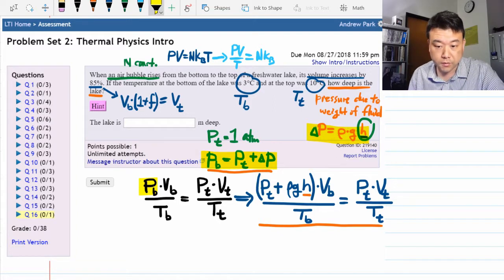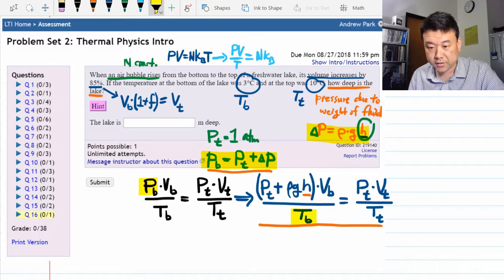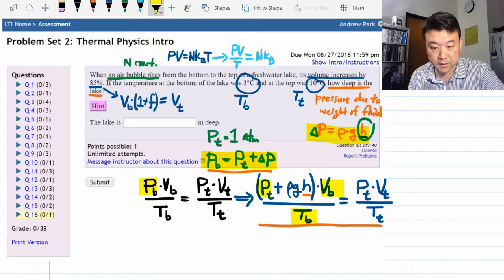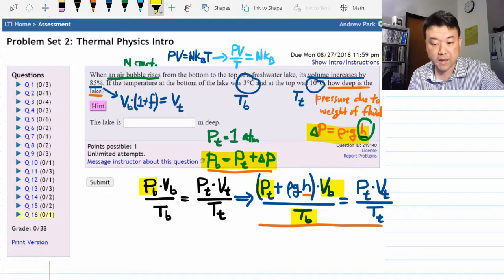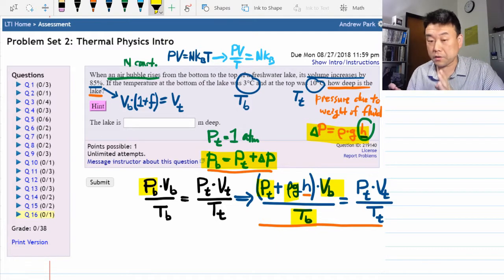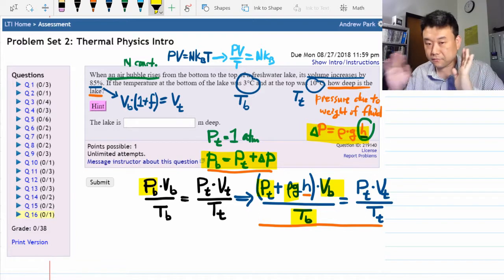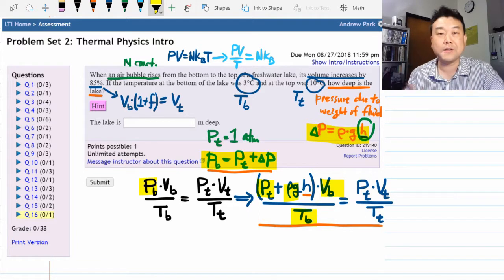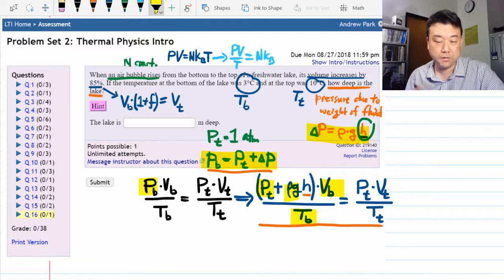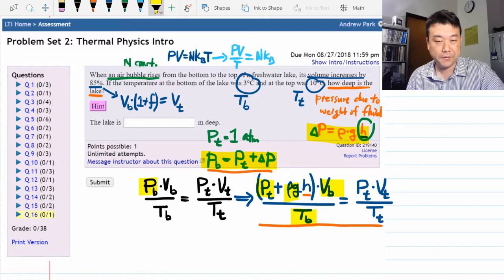I need to move Tb over to the other side, Vb over to the other side, subtract Pt, and then divide out by rho g. So I'll just do that in my head, write it down. You can pause the video and make sure you're following.